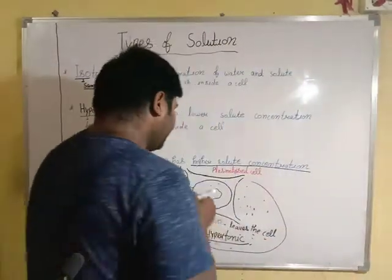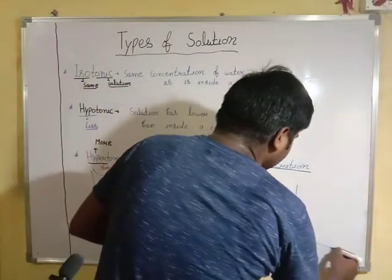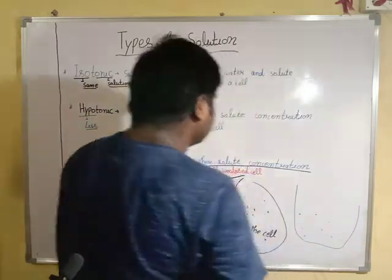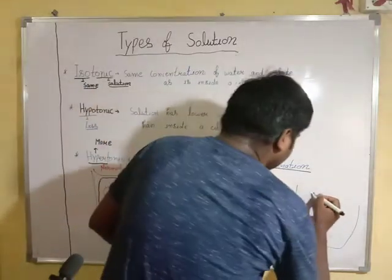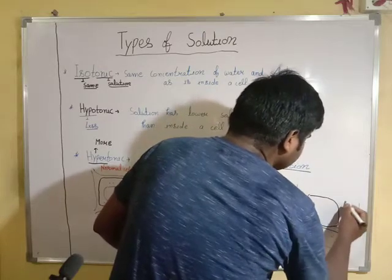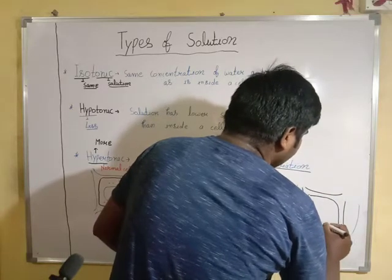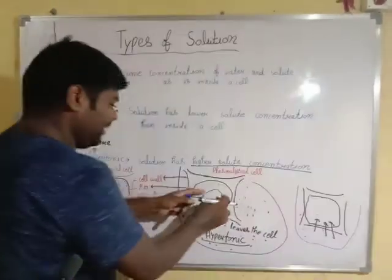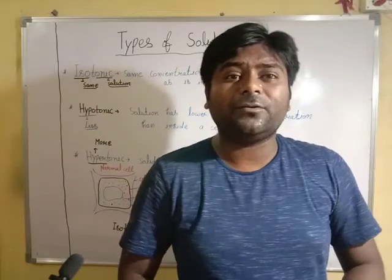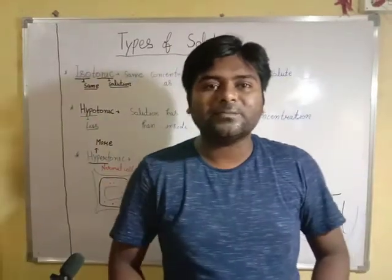When a plasmolyzed cell is placed into a hypotonic solution, water is more outside, so we have the movement from higher concentration to lower concentration — water will enter into the cell. Water enters the cell, causing swelling of the cell, meaning the cells are getting their original shape. That process is known as deplasmolysis.